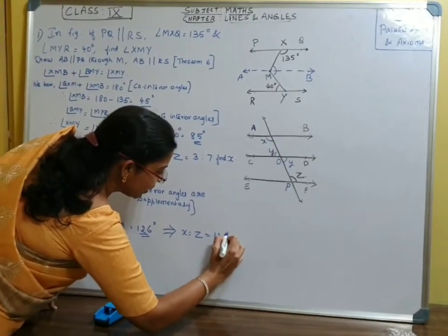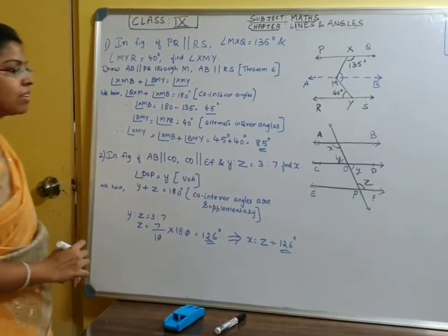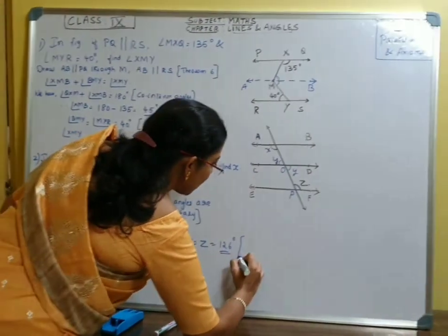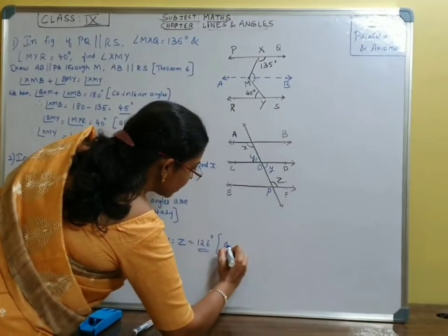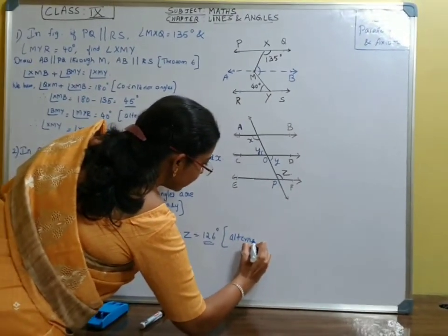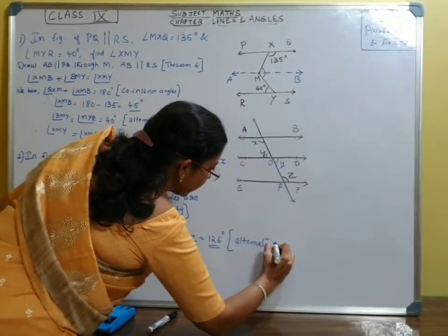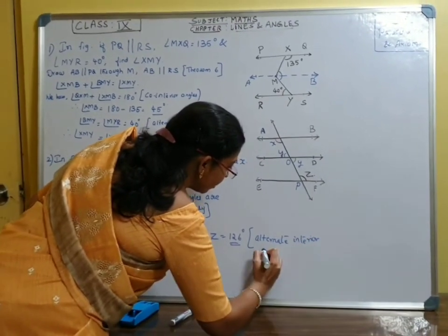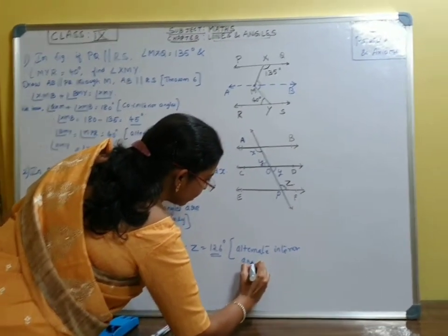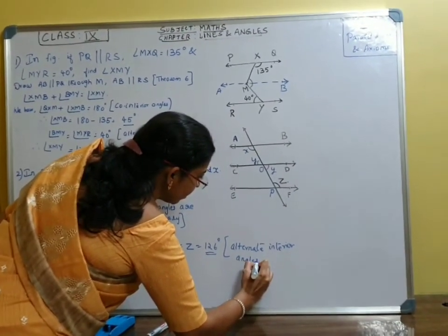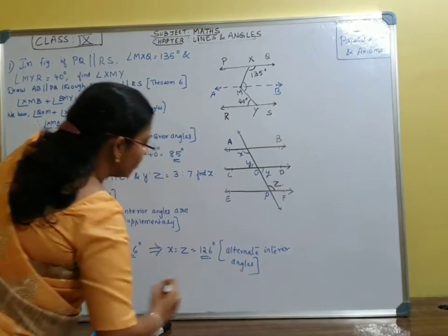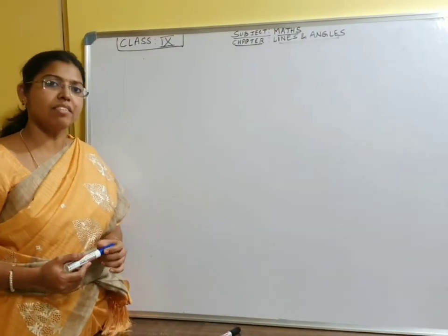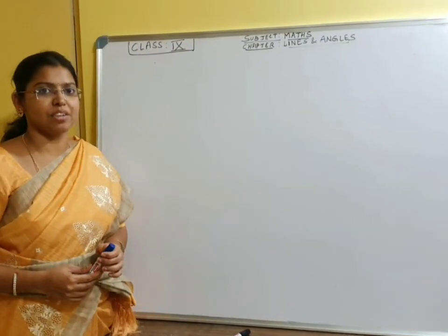Once Z is 126 degrees, X is also equal to Z, which is 126 degrees. The reason: X and Z are alternate interior angles, so they are equal. We will continue in the next session. Thank you.